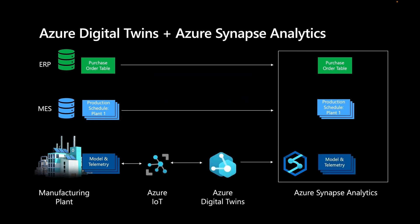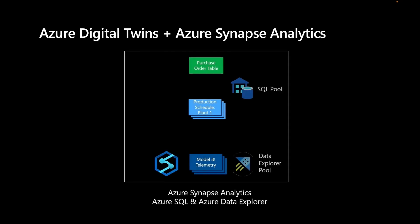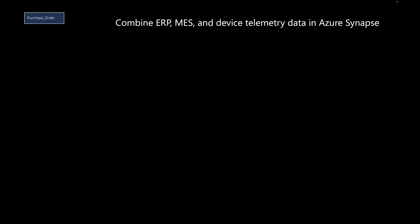And with the new historization capabilities for Azure Digital Twins, Alice can also ingest, model, and contextualize telemetry data into the Azure workspace as well. Once ingested, these data sets can be queried and combined in Azure Synapse across both SQL and Azure Data Explorer pools.